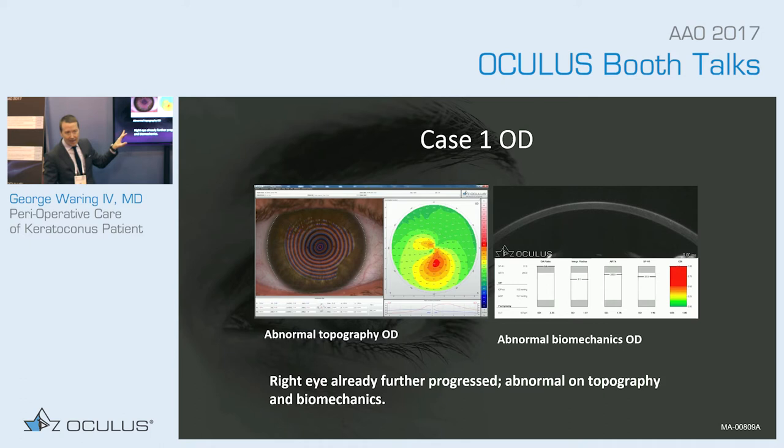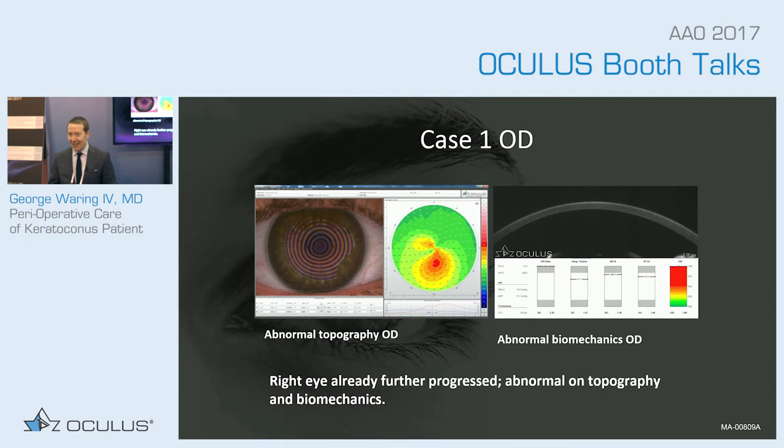The right eye in this case was the fellow eye. The left eye that appeared seemingly normal was actually forme fruste keratoconus — what we call prospective forme fruste keratoconus — meaning the cornea is probably weak but has not had a chance to manifest itself yet.